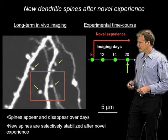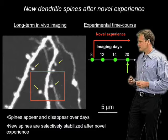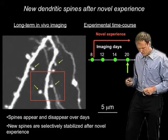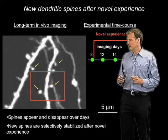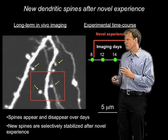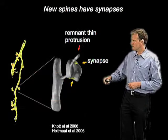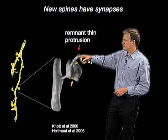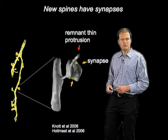One question you might ask is whether or not these new spines have anything to do with synapses. To answer that question, one has to go beyond optical microscopy — which highlights one of its limitations: it doesn't quite have sufficient resolution to resolve synapses. One has to go back to the electron microscope and reconstruct these synapses in the surrounding neuropil. Here is a 3D electron microscopy reconstruction of the spine that you just saw grow. The reconstruction shows the remnant thin protrusion and the large spine head, which is part of a bona fide synapse with presynaptic structures.